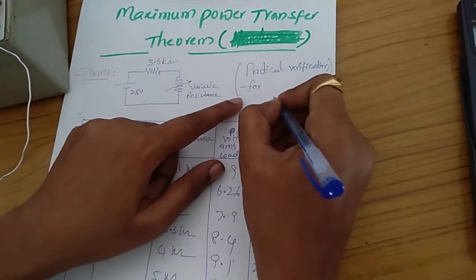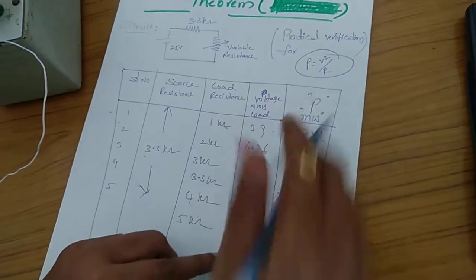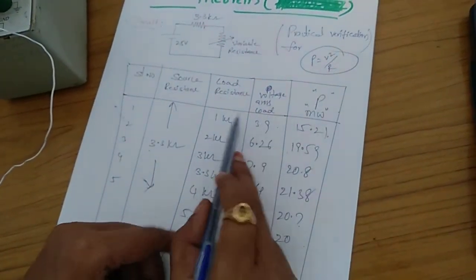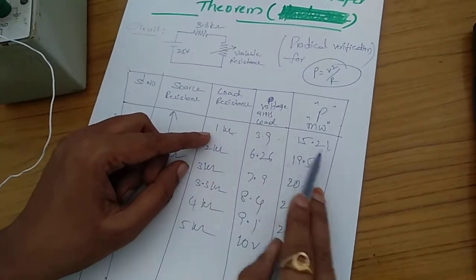So as per the P equals V squared by R formula, we used this formula. This is the voltage across the resistor and this is the load resistance. As per the V squared by R formula, if you calculate the power,